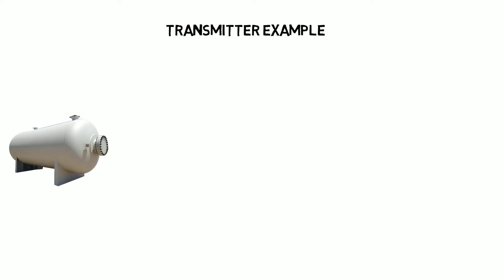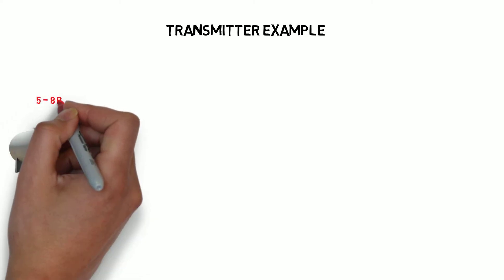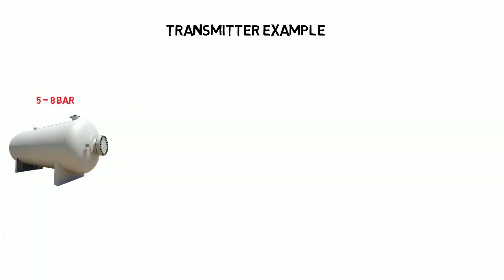The pressure of this vessel is usually at 5 bar but could potentially get up to 8 bar under certain process conditions. In this circumstance we might see a 0 to 10 bar transmitter installed on one of the nozzles of the transmitter.